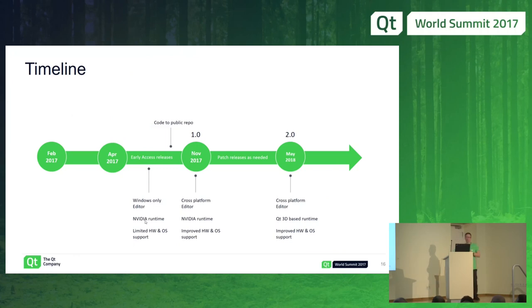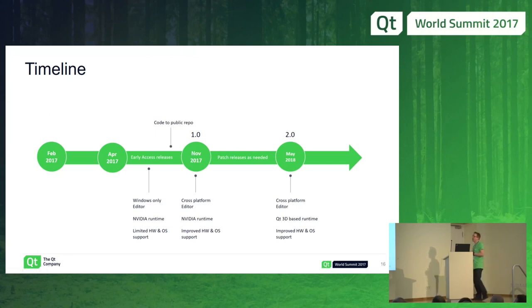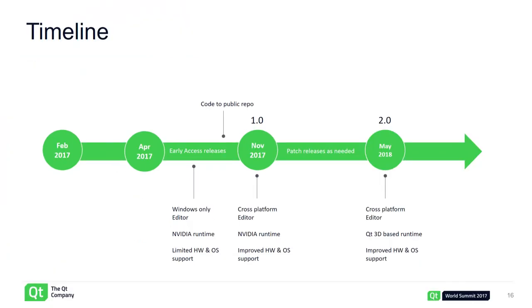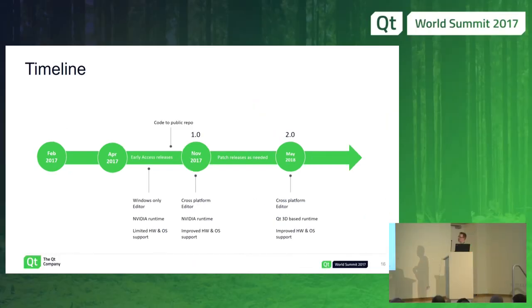As a recap of the timeline: code is now in the public repository, which happened last Friday. The first release is at the end of November, and the 2.0 release is in May 2018. Importantly, the rendering engine change will not be visible to users — if you start developing on top of 1.0, the same application will look the same in 2.0. This is happening under the hood and should not affect application developers using 1.0.